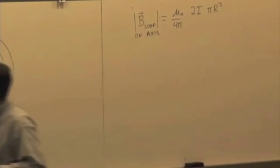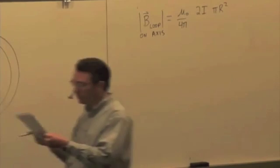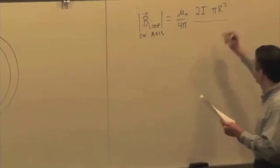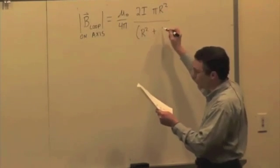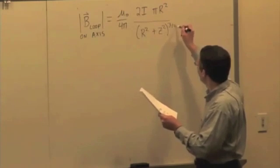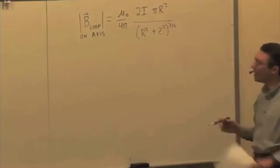So, we're looking at the square root of r squared plus z squared to the 3 halves power. Okay?